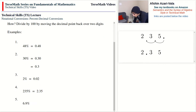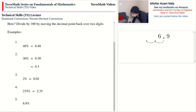Next we have a value that already begins with a decimal: 6.9%. This one is even easier because we already know where the decimal point is. We take the decimal point and move it back over two digits, adding a zero. We end up with 0.069. Adding the zero on the whole side gives us 0.069.